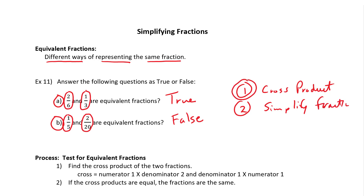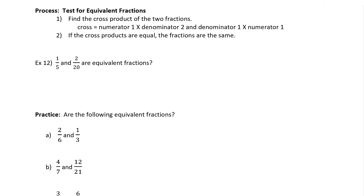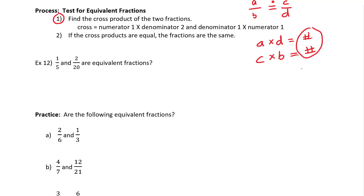Let's start with number 1: the cross product test for equivalent fractions. Step 1, we find the cross product. We have two fractions and we want to know if they're equal. We take the numerator of one and the denominator of the other and multiply those together to get a number. We then take the numerator of the other and multiply it by the denominator of the first. If these numbers are equal, it's the same fraction. If they're not equal, they represent different values.